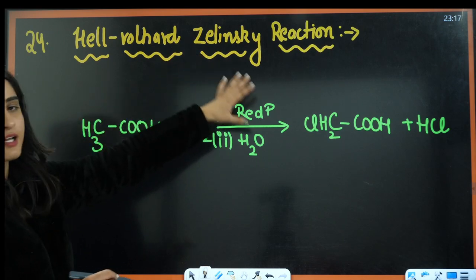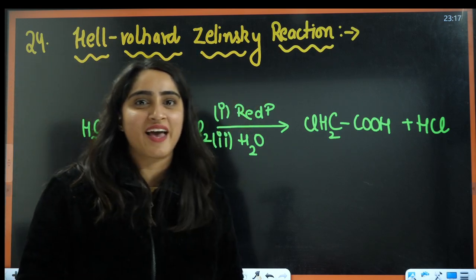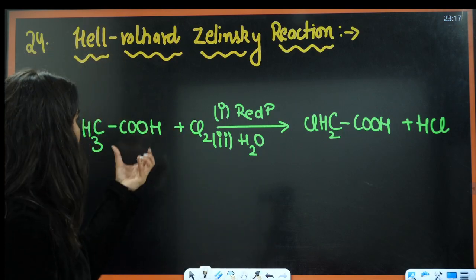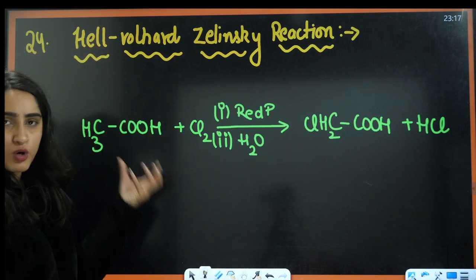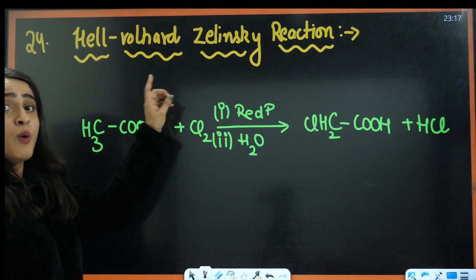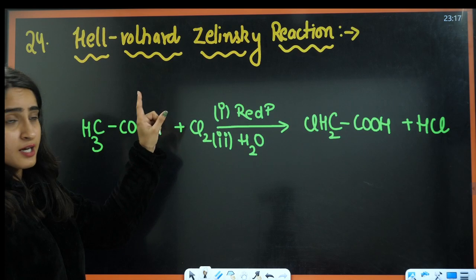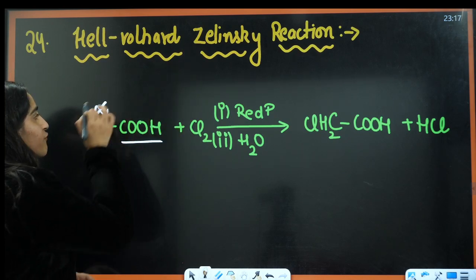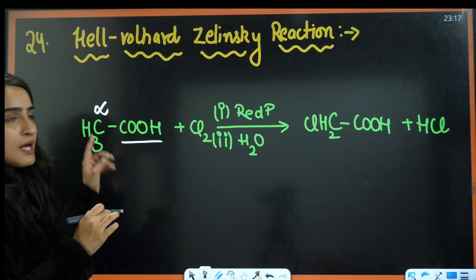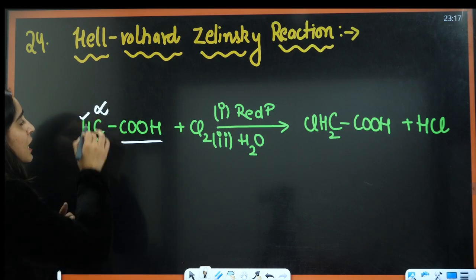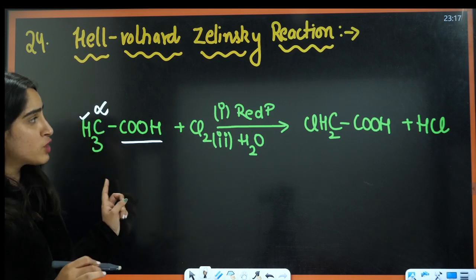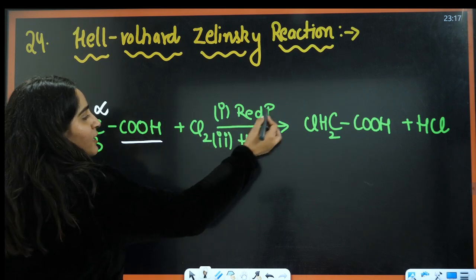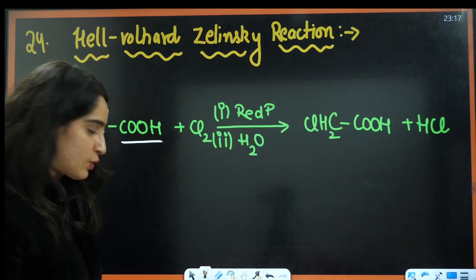Next is HVZ reaction (Hell-Volhard-Zelinsky reaction). Here we have carboxylic acid, for example CH₃COOH. Do not confuse this with Borodine-Hunsdiecker. In HVZ, the alpha hydrogen is replaced by chlorine in presence of chlorine, phosphorus, and water.